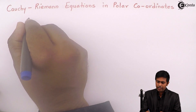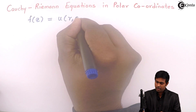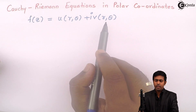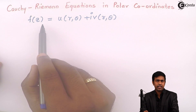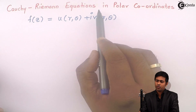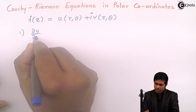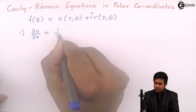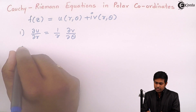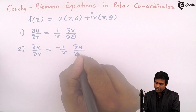Let's assume that f(z) is equal to u plus iv, where u and v are both functions of r and theta. In such cases, if we want to prove that the function is analytic, we will use Cauchy-Riemann equations in polar coordinates. The first equation is: ∂u/∂r = (1/r)(∂v/∂θ). The second equation is: ∂v/∂r = −(1/r)(∂u/∂θ).